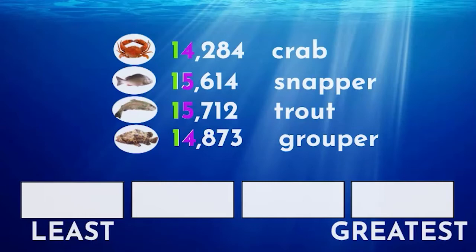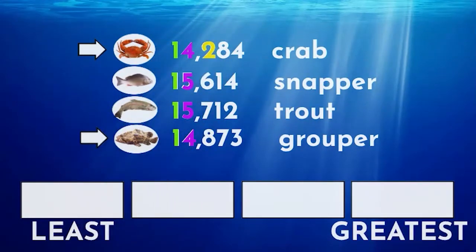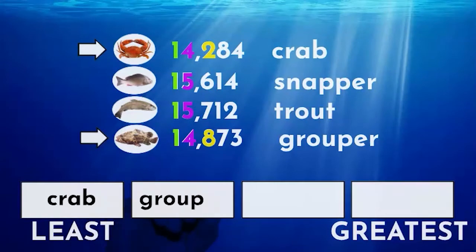...which two catches have the least value in the thousands place? Correct! It's the crab and grouper — both show the value of four thousands. We must move one more digit over to see if the crab or grouper has the least value. The crab has two in the hundreds place and the grouper has an eight in the hundreds place. This means the crab has the least value of all our catches, and the grouper is the next least.